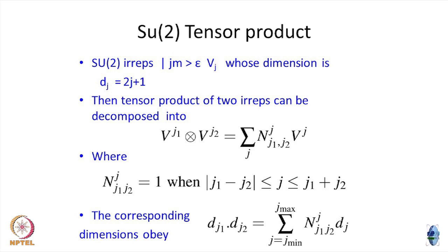Pictorially as Young diagrams, we denote the n−1 fundamental weights as a single box, double vertical box, triple vertical box, and so on. Any irrep is given by a Young diagram involving the corresponding fundamental weight diagrams. Now moving to SU(2) for clarity on tensor products: SU(2) irreps are denoted by J, the highest weight (highest magnetic quantum number), and belong to a vector space V_J of dimension 2J+1.